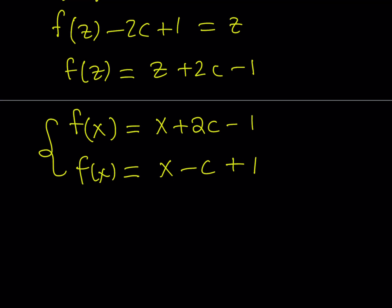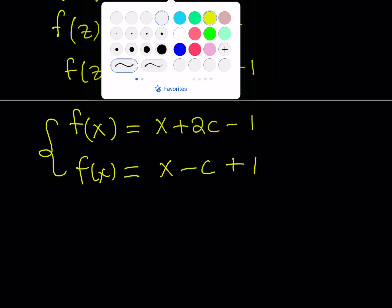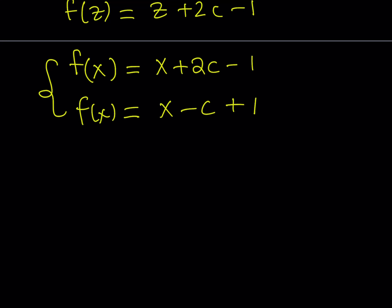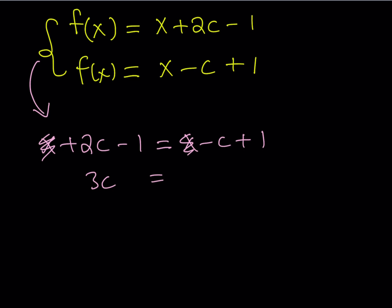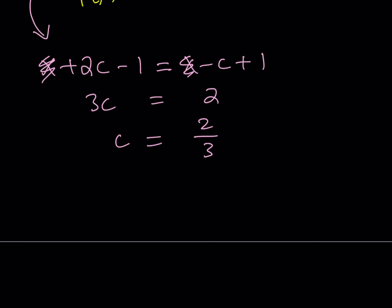At the same time, we know that f of x equals x minus c plus 1. Since both expressions define the same function, we set them equal: x plus 2c minus 1 equals x minus c plus 1. Canceling the x's, we get 3c equals 2, which gives c equals 2 thirds. We now have the value of c, which was f of f of 0, and it equals 2 thirds.